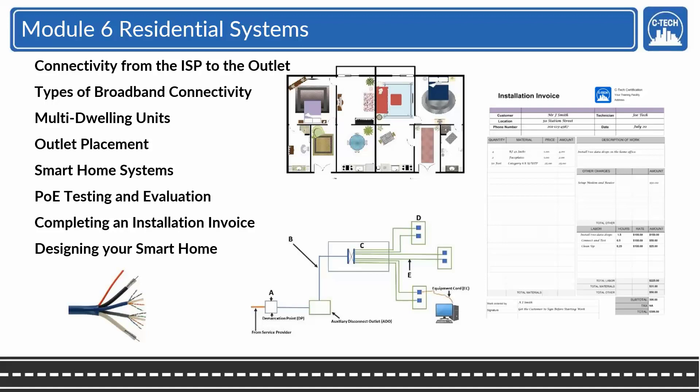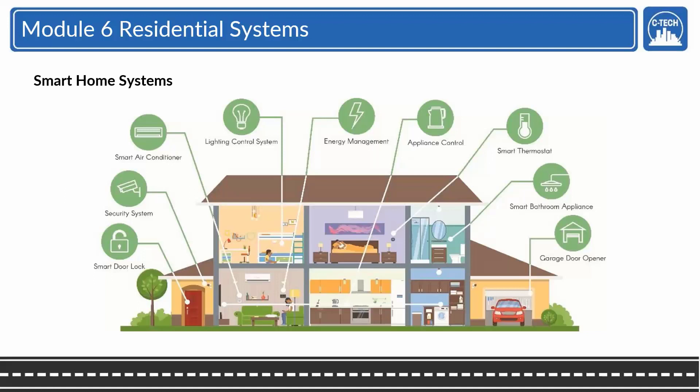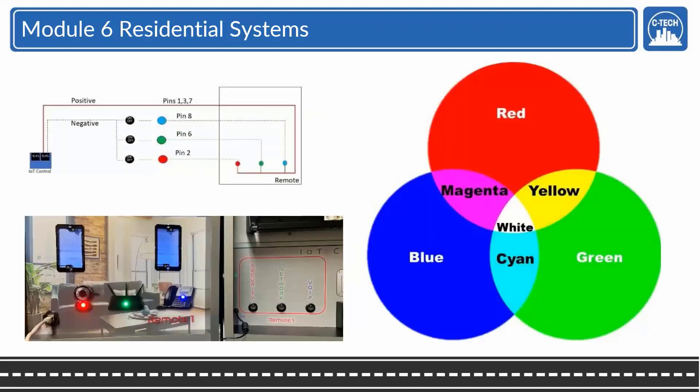As we stated earlier, we're going to go through all the smart home systems - the security, the entertainment, the networking, the HVAC. Here's an example of the different LED lighting systems and how they can be combined for color depending on which pins are activated on the four-pair.